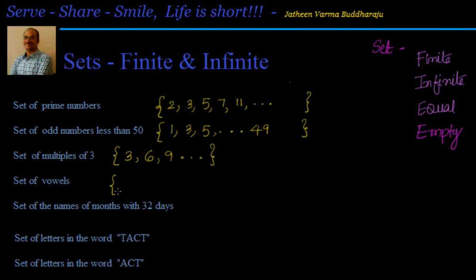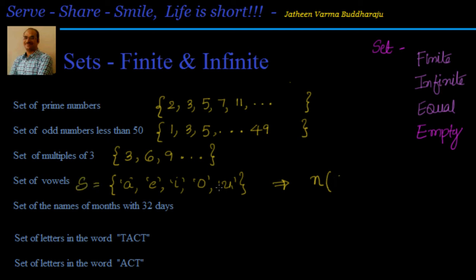Now let's look at the set of vowels. We know the set of vowels is A, E, I, O, U. There are only 5 of them, so I can write them all. Since there are 5 elements, I can represent that by writing N(S) = 5, where 5 is called the cardinality — that is, the number of elements in the set.